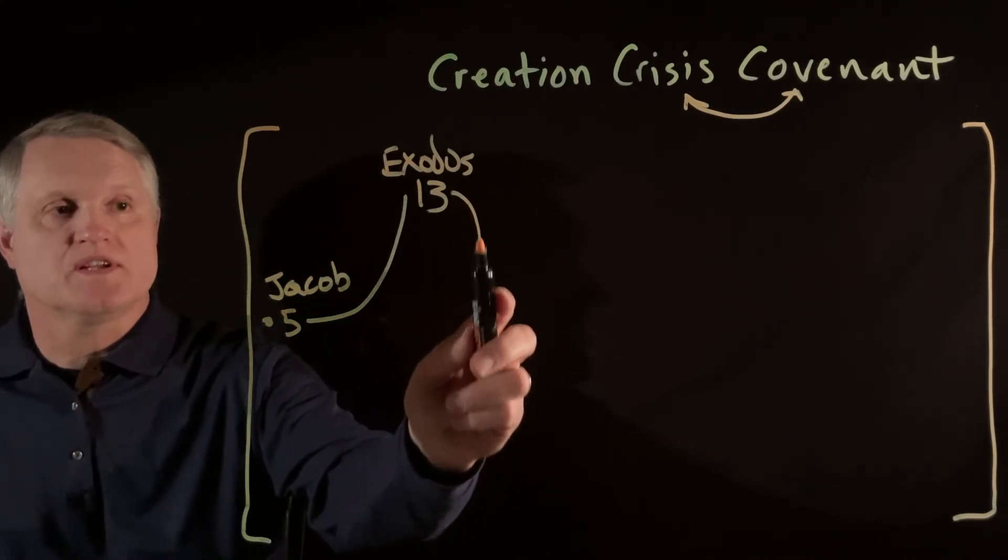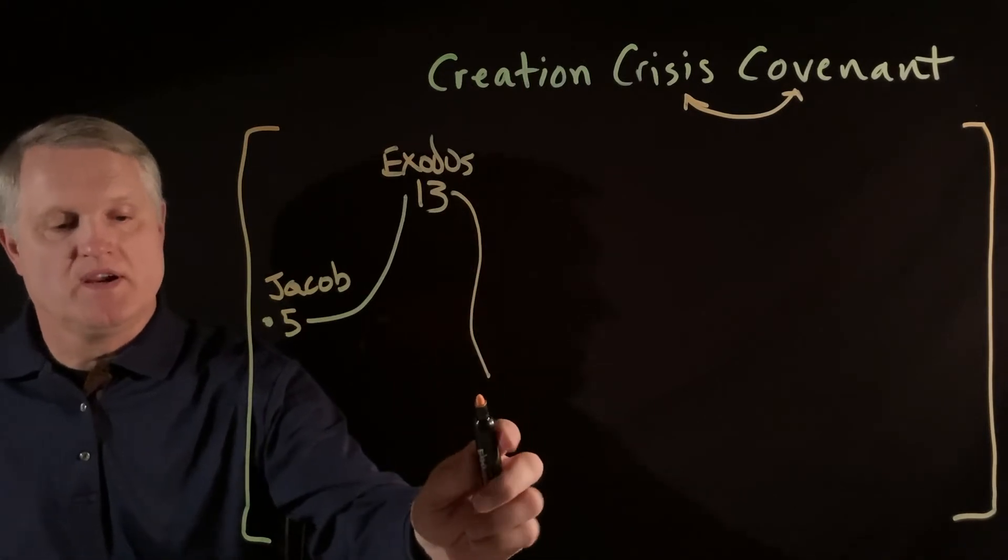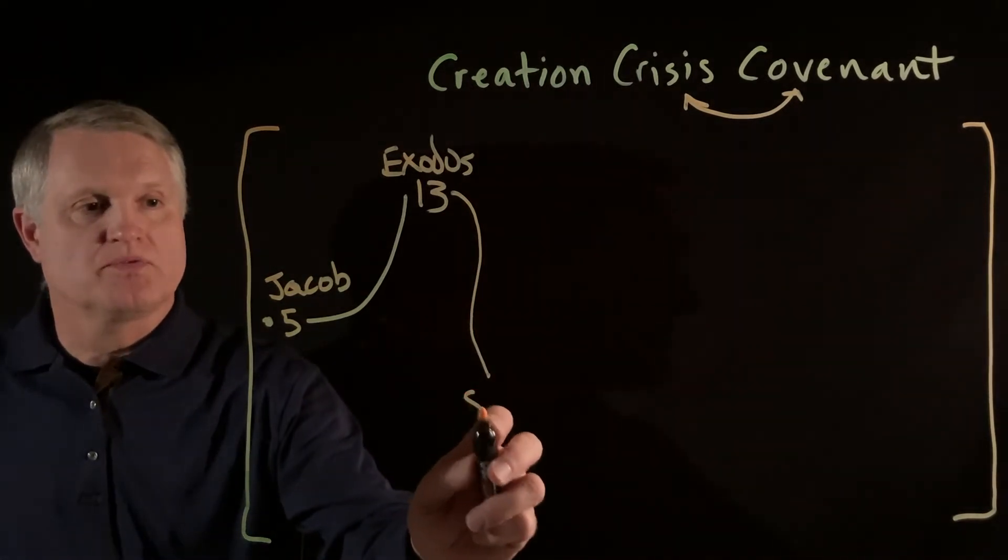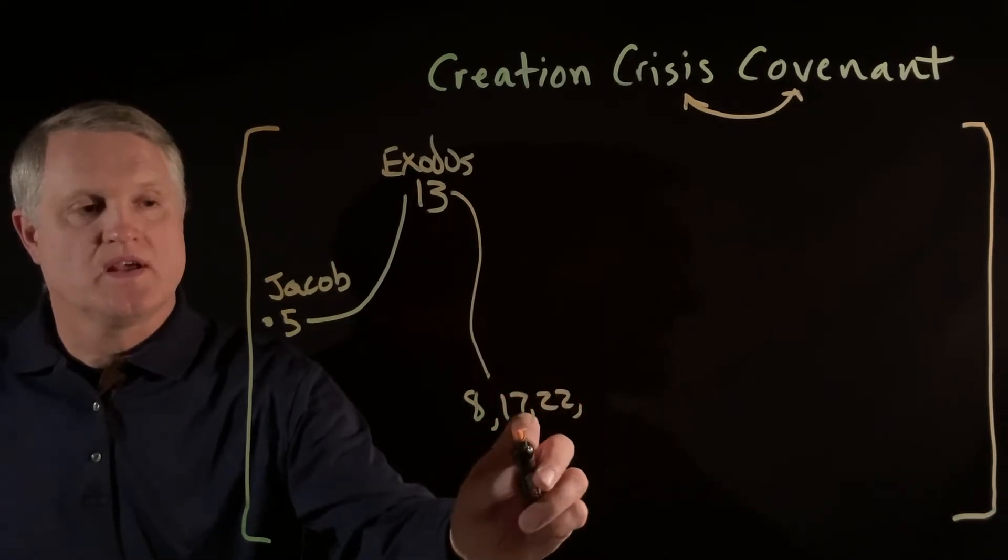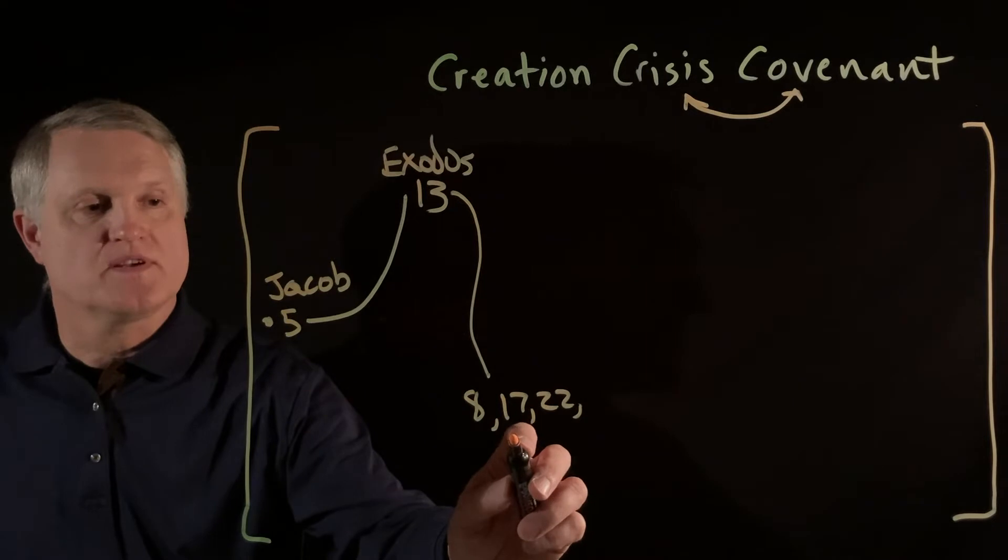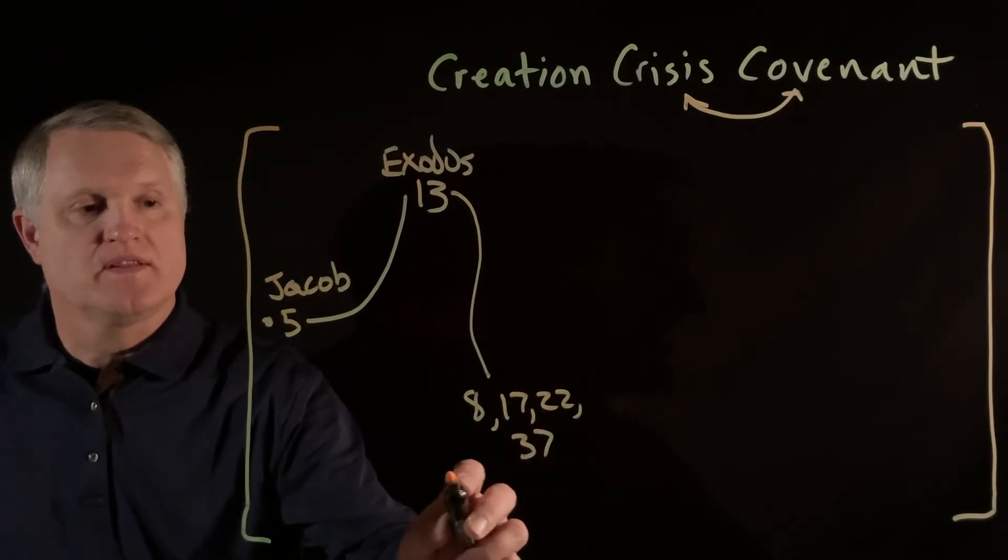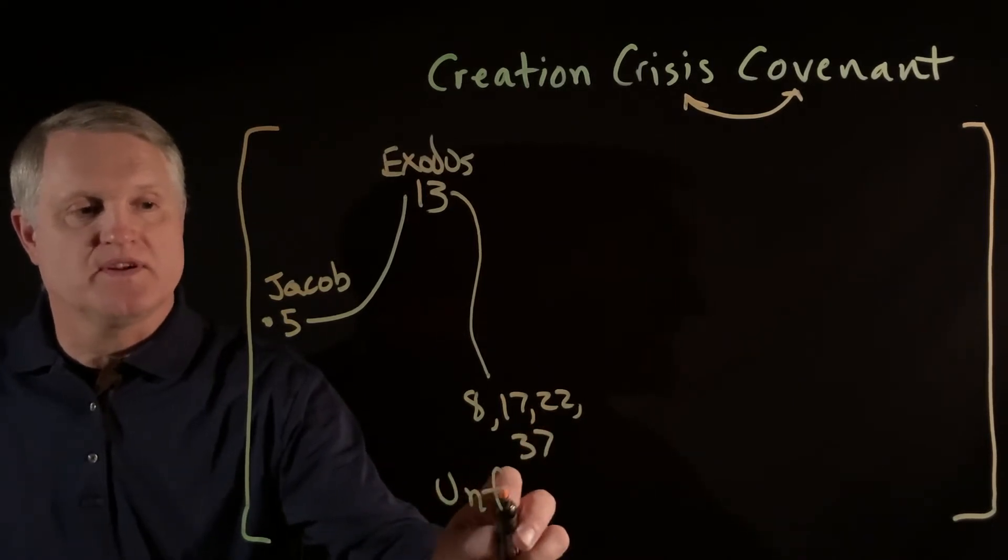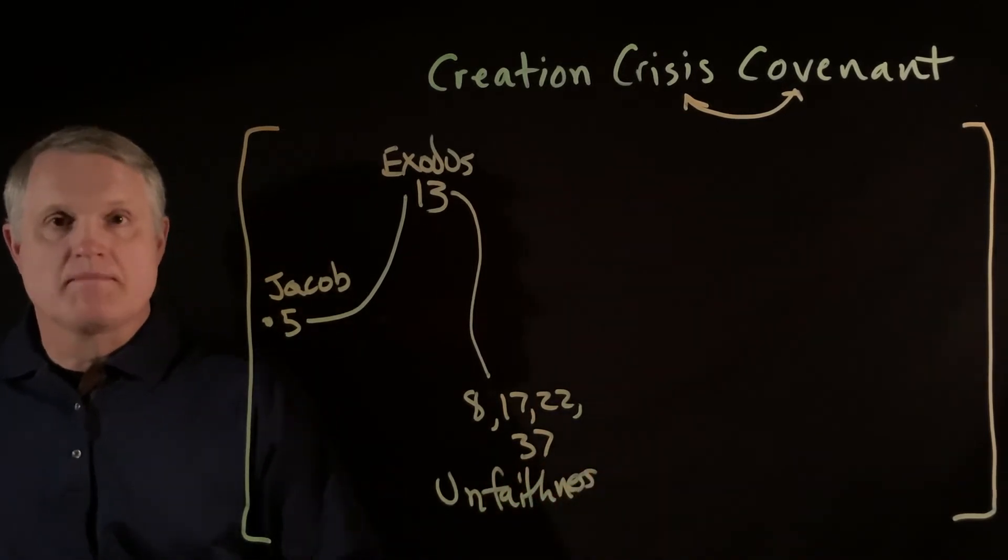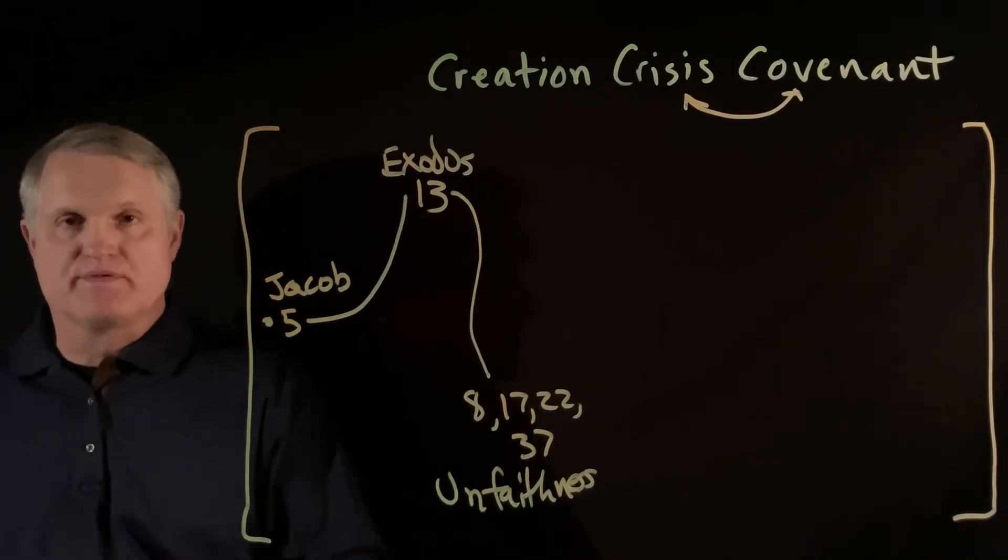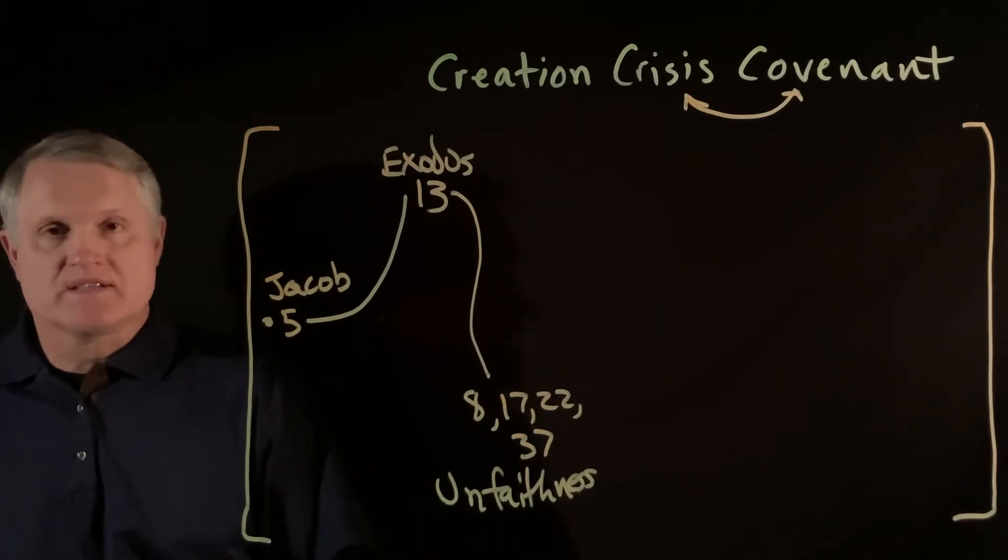Well, of course, things go south, and we hear in verses, and I'm just going to put the list here, 8, 17, 22, and 38, or 37, the general idea of unfaithfulness. In fact, the word unfaithfulness is found in each of those verses. Aman, with the negative in front of it. Not faithful.